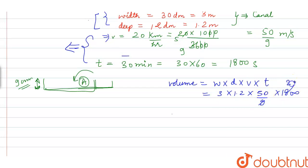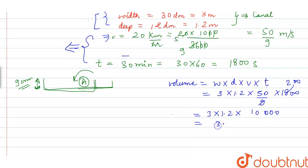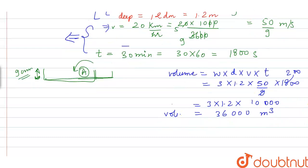Simplifying: 3 × 1.2 × 10,000 = 36,000 cubic meters. So the volume of water is 36,000 m³.